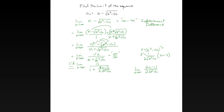Instead of doing L'Hôpital's rule again, I think we might end up in some kind of an infinite loop. Let's see — this is infinity over infinity, so derivative of the numerator is 2; derivative of the denominator is 2 times 1 over 2 square roots of n squared minus 11n, times 2n minus 11. Yeah, we're in some kind of an infinite loop — now we're looking at root of n squared minus 11n over 2n minus 11.